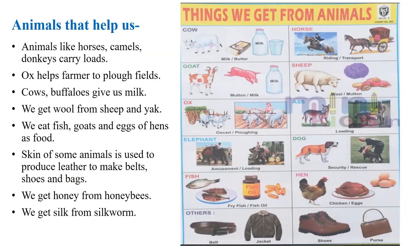Animals that help us: animals like horses, camels, donkeys, and elephants help us by carrying loads. The ox helps farmers to plough fields. Animals like cows, goats, and buffaloes give us milk. We get wool from animals like sheep and yak. Meat of some animals like goats and eggs of birds like hens are used as food by people.